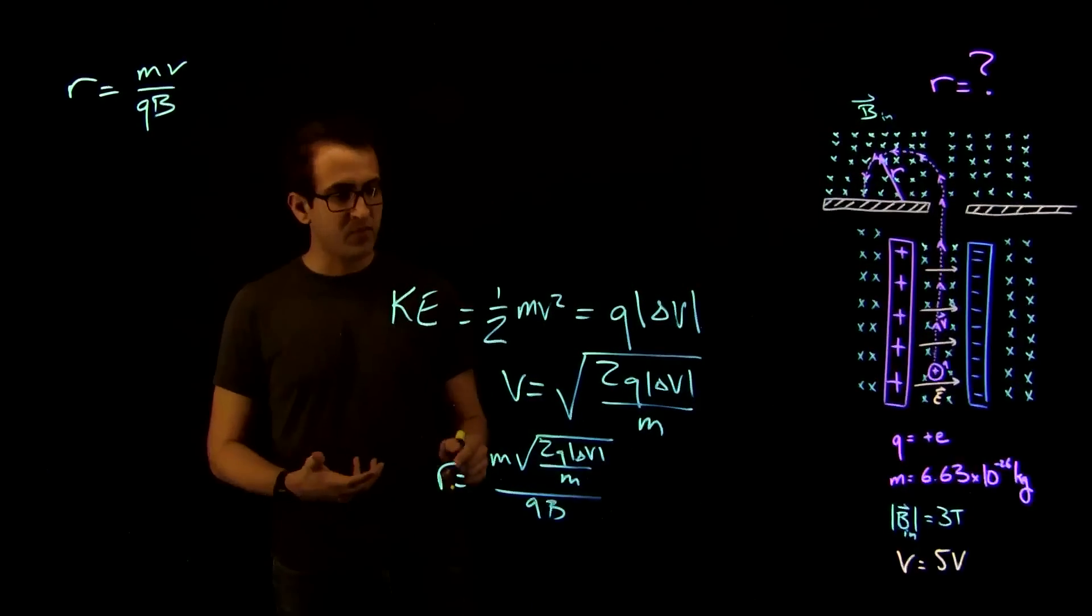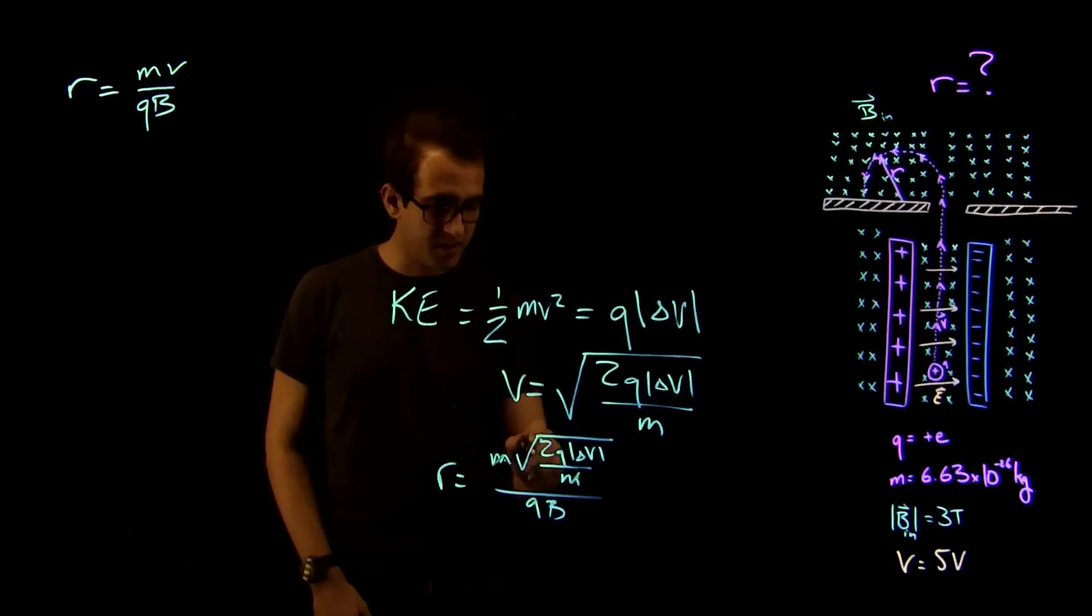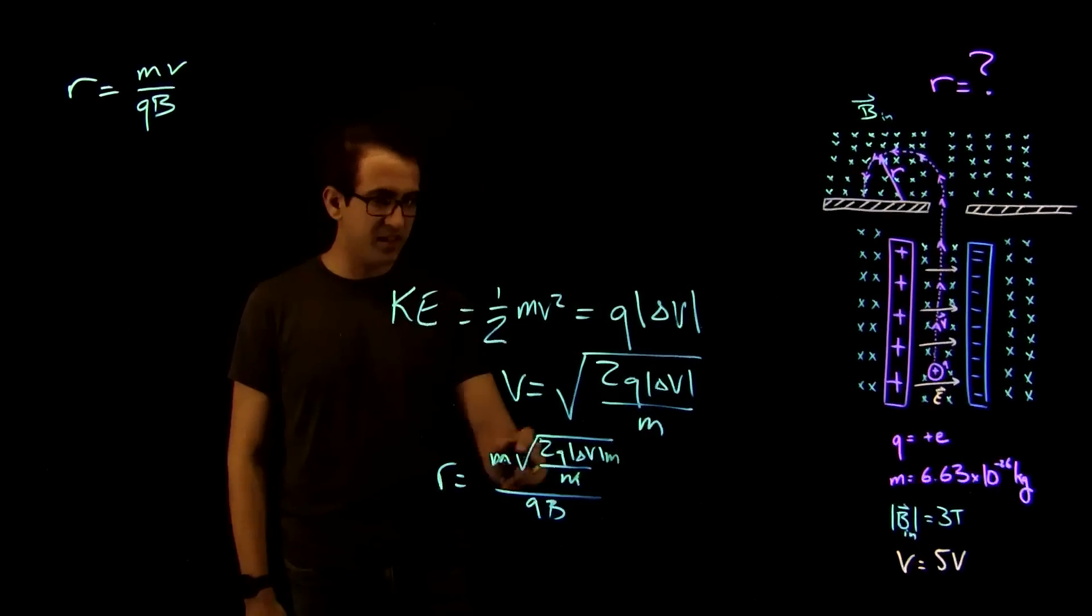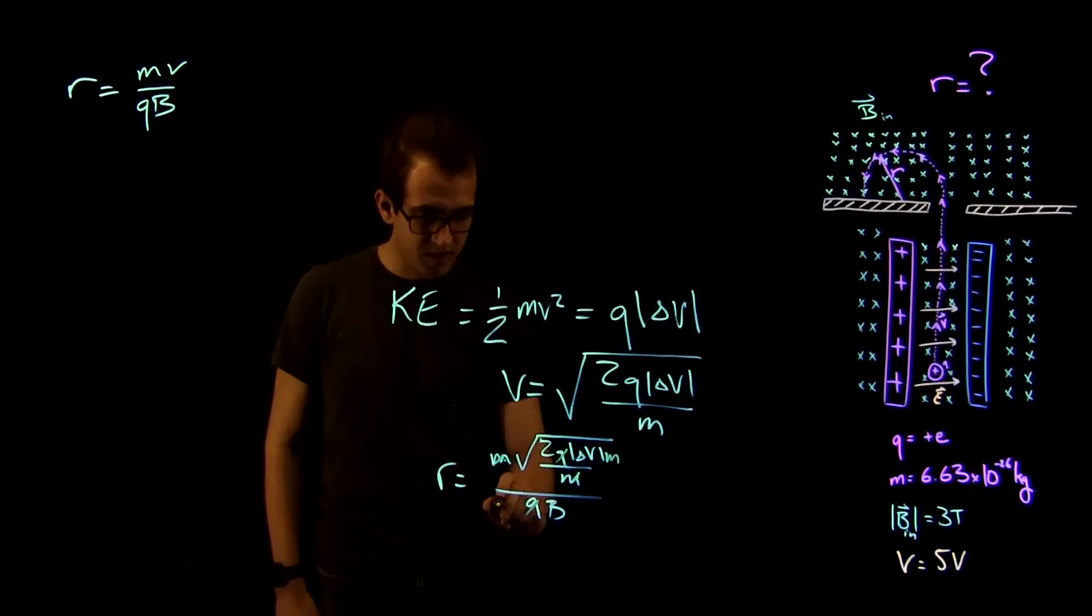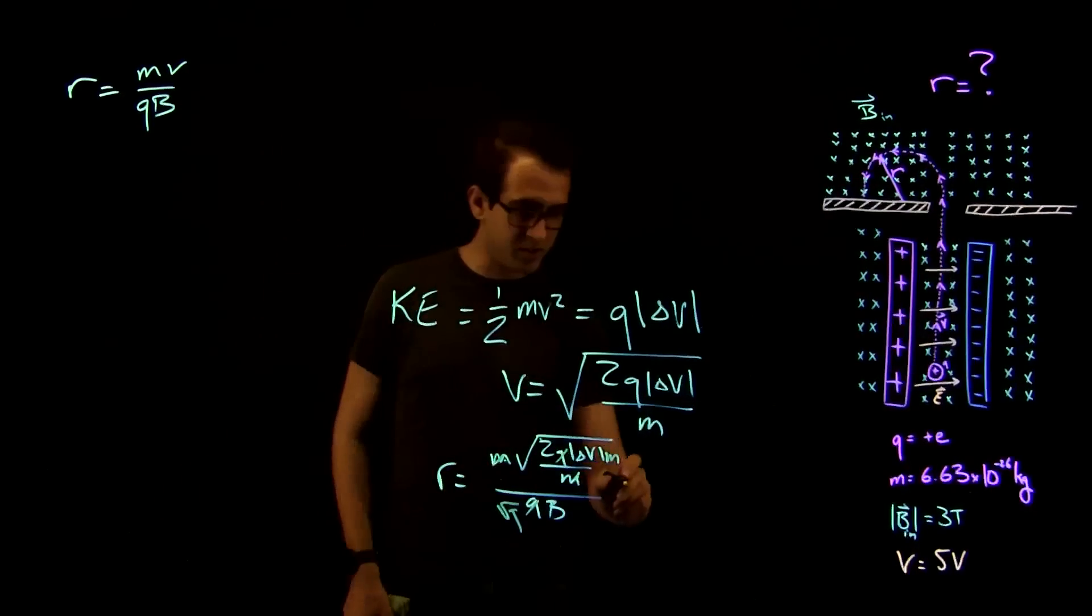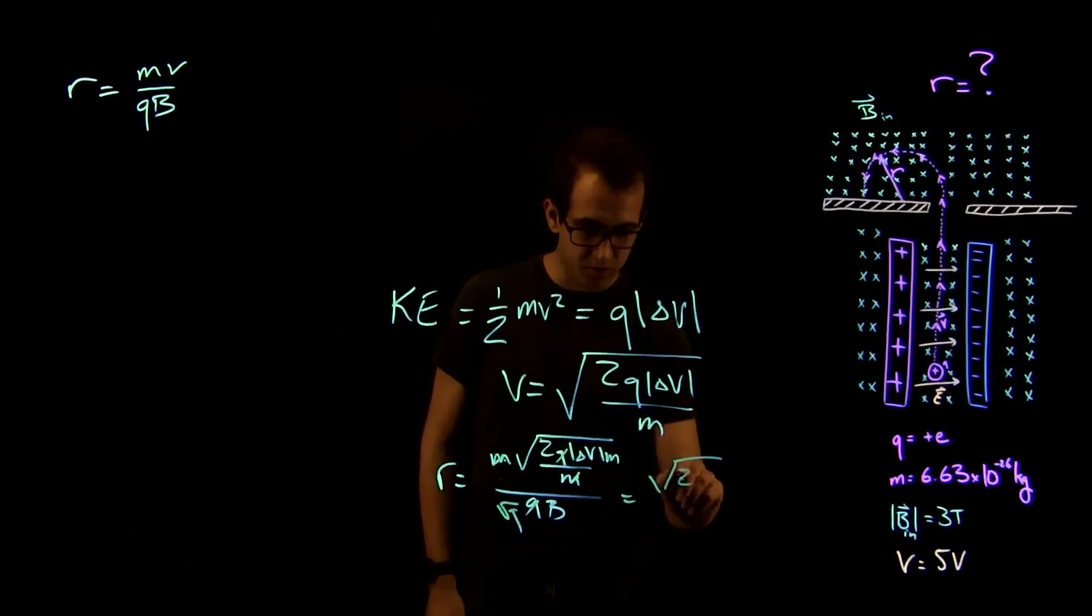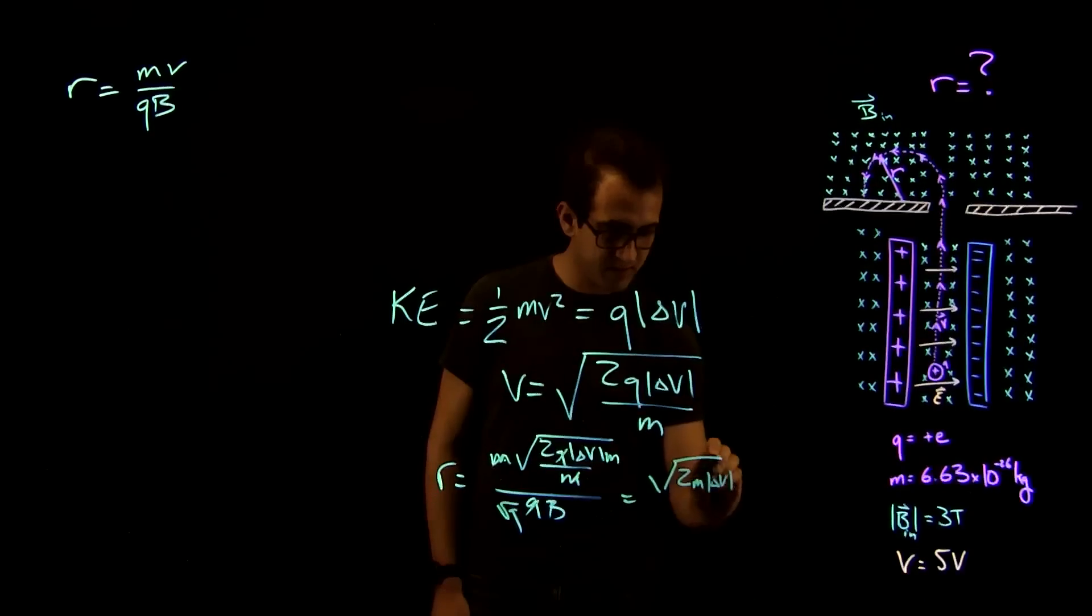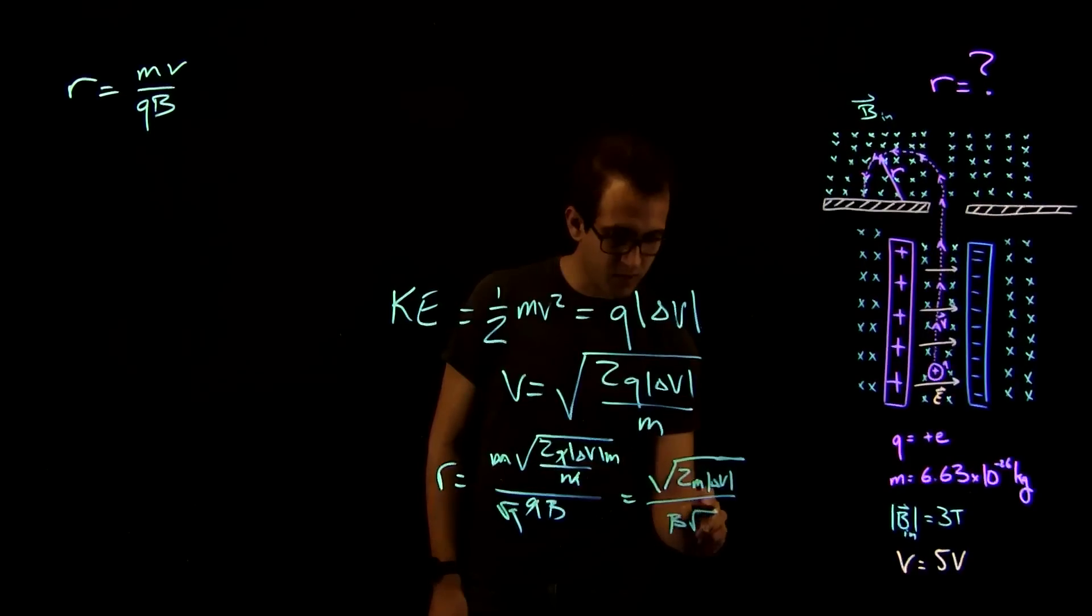So the way we do that is we see there's an M here and there's an M here. So we'll cancel that and put an M in the numerator. We see there's a Q here and a Q here. So we'll cancel those and put a root Q in there. So what that will mean is our final expression is going to be R is equal to square root of 2M delta V over B square root of Q.